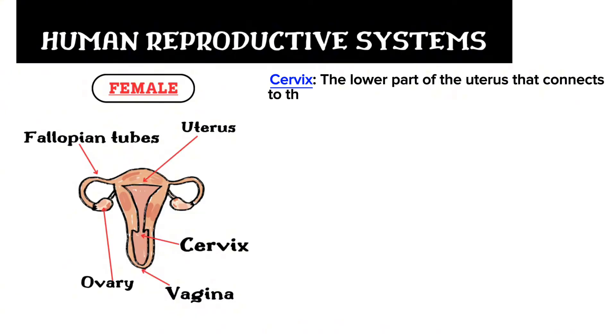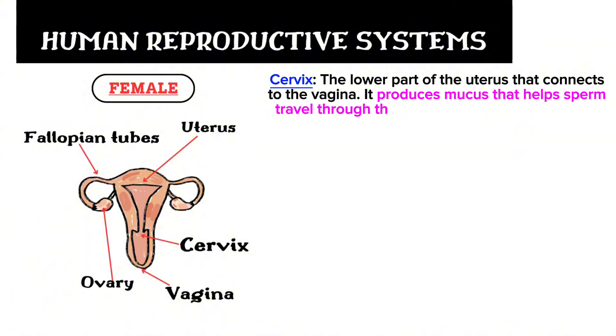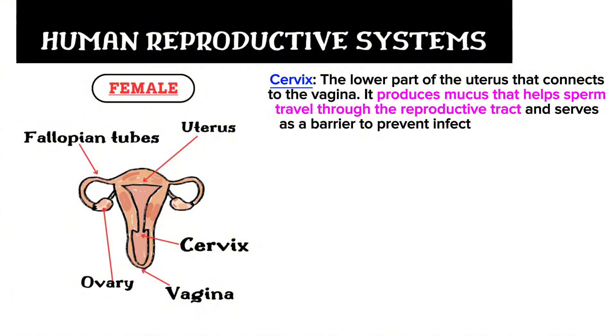The cervix is the lower part of the uterus that connects to the vagina. It produces mucus that helps sperm travel through the reproductive tract and serves as a barrier to prevent infections from entering the uterus.